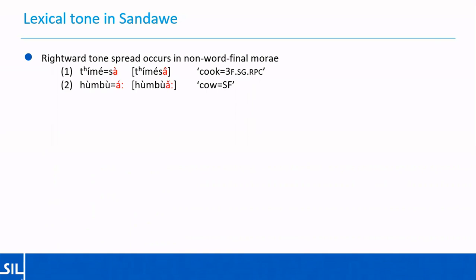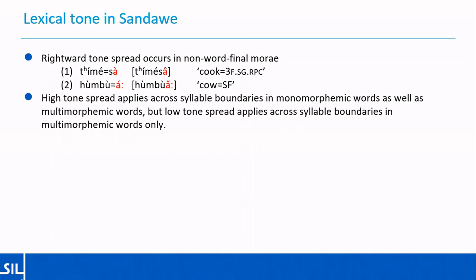Rightward tone spread occurs in non-word-final morae. So a low tone is realised as a high falling tone when it follows a high tone. For example: ti me sa, 'she cooks'. The low-toned third person feminine singular realis pronominal clitic, sa, is attached to a verb stem ending in a high tone and therefore surfaces with a high falling tone rather than a low tone. High tone spread applies across syllable boundaries in monomorphemic words as well as multimorphemic words, but low tone spread applies across syllable boundaries in multimorphemic words only.